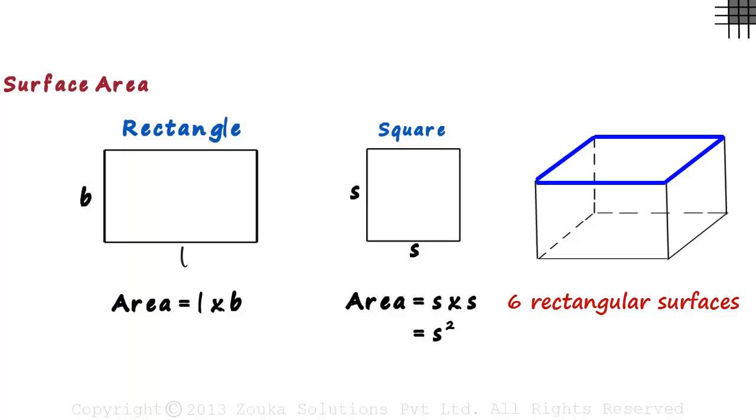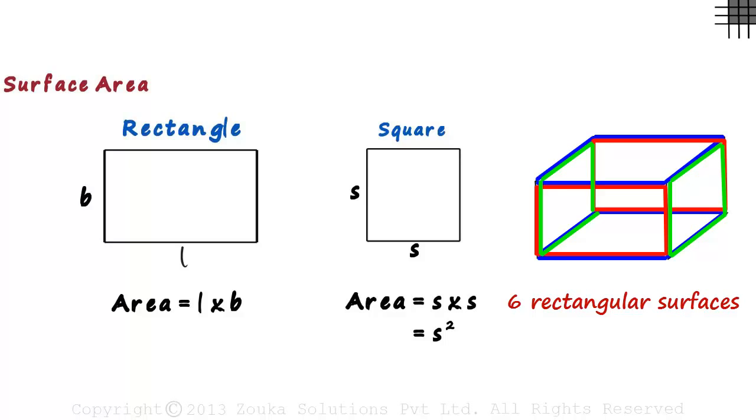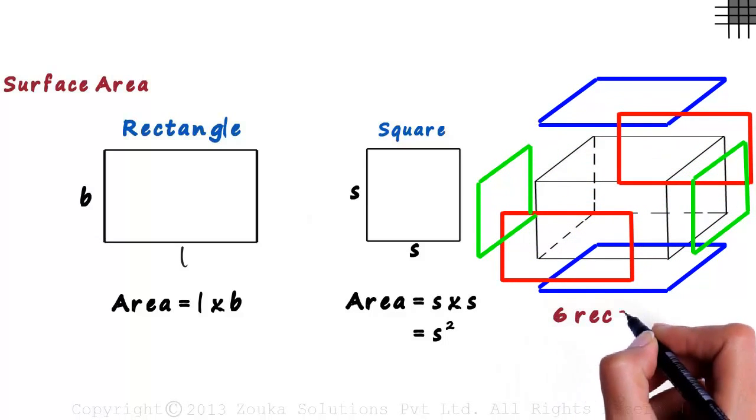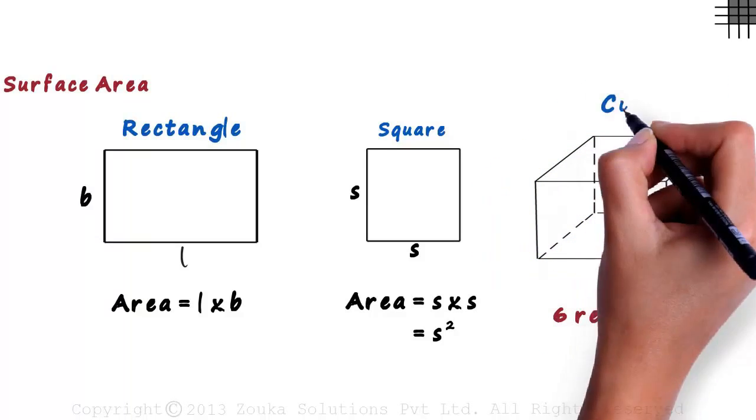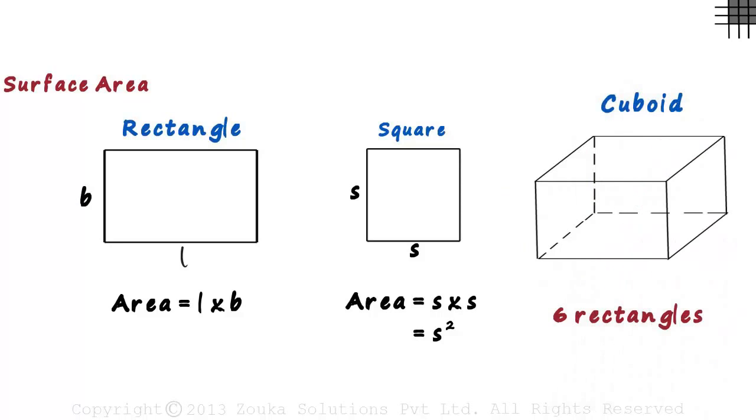One on top, one at the bottom, one in the front and one at the back, one on the left and one on the right. So this figure's surface area will be the sum of areas of the six rectangles. The three dimensional shape we saw is called a cuboid. It's a three dimensional shape bounded by rectangular faces.